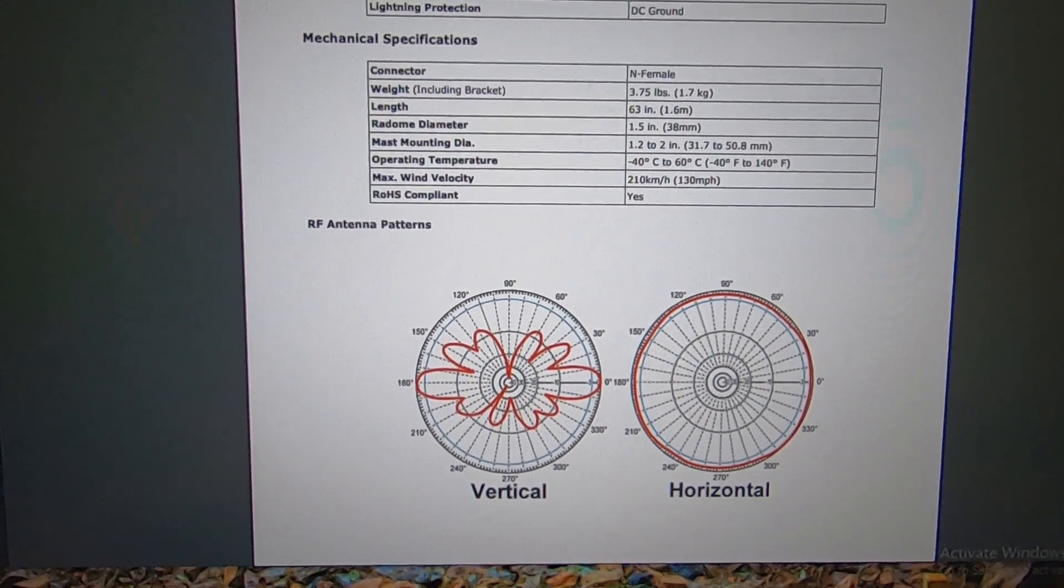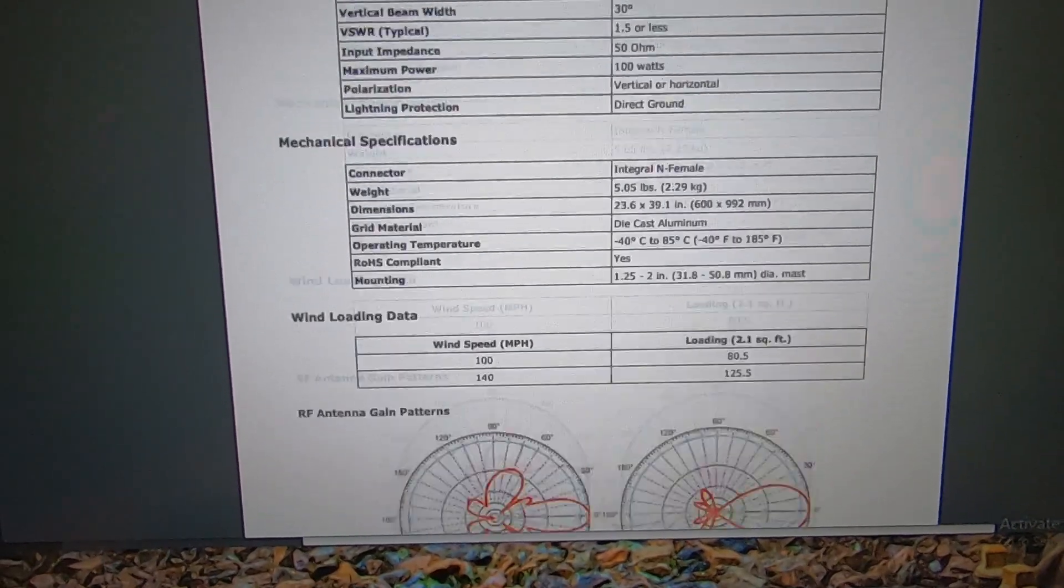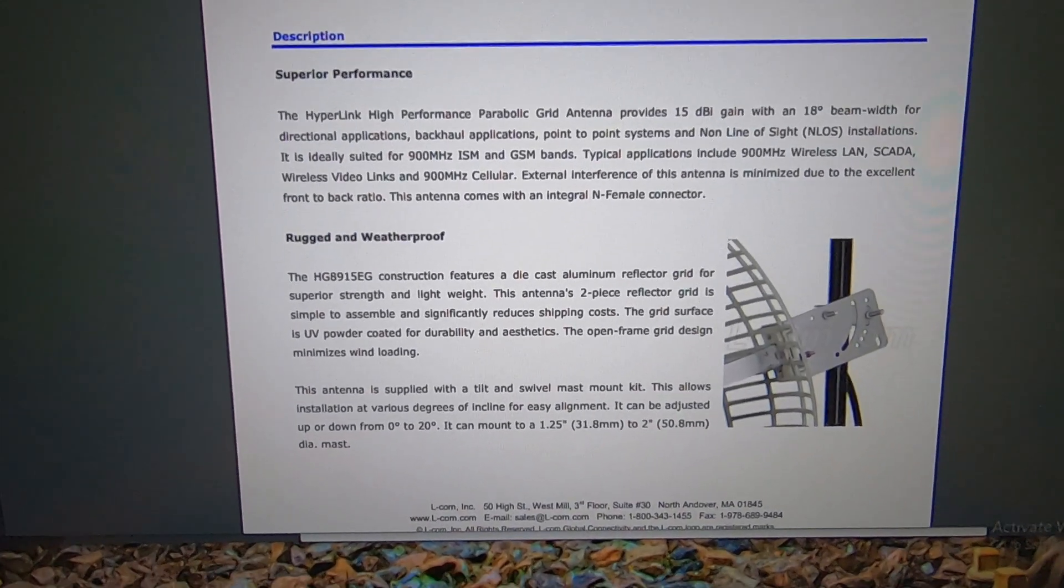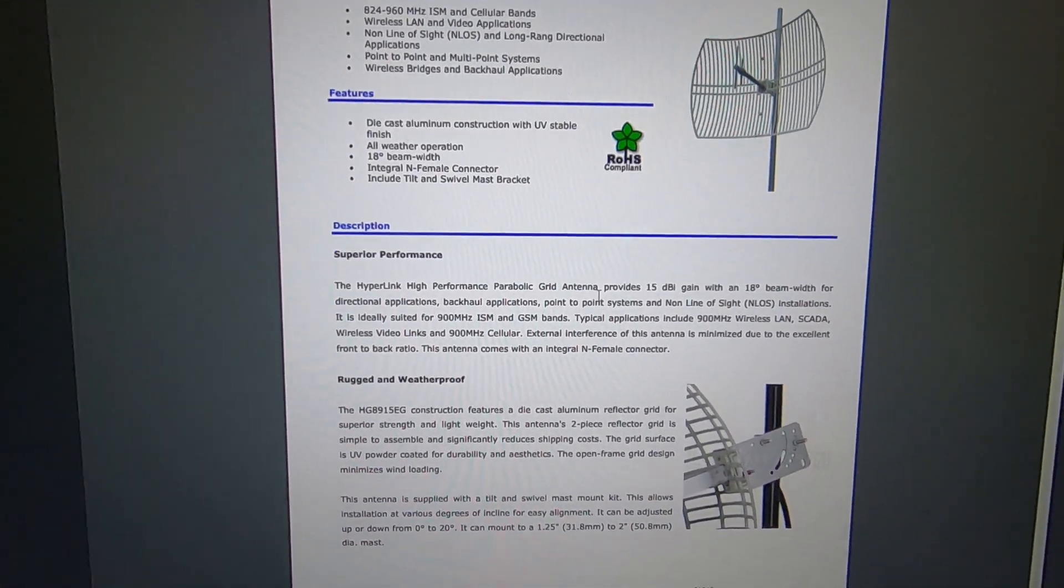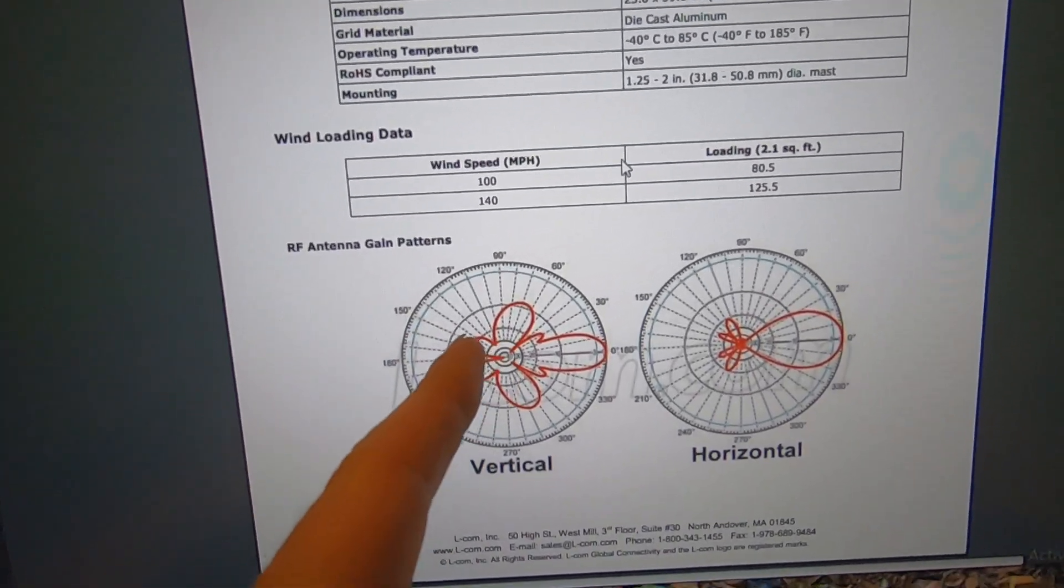So if we look at this 15 dBi gain antenna, you're going to notice it's a little grid type antenna. So we obviously have more directivity to it.